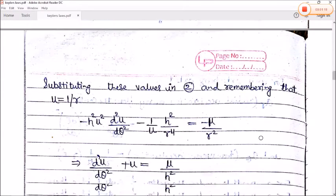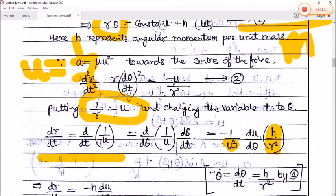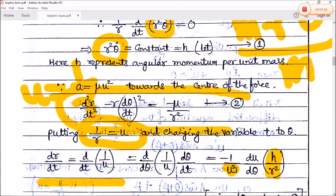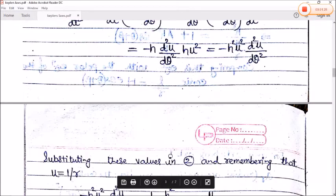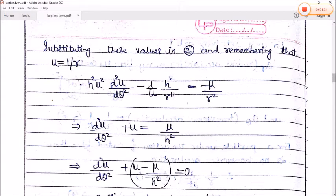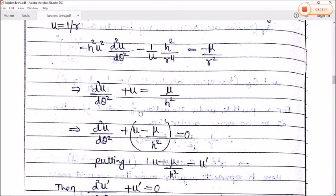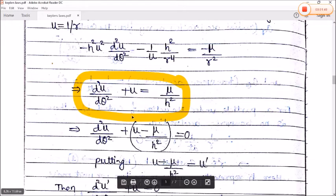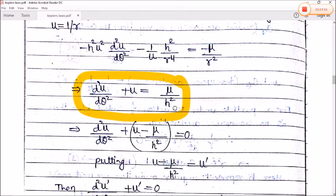After substitution into the radial acceleration equation and solving, converting all terms into u, we obtain: d²u/dθ² + u = μ/h².